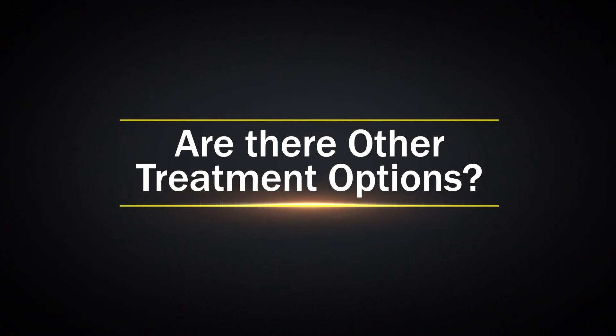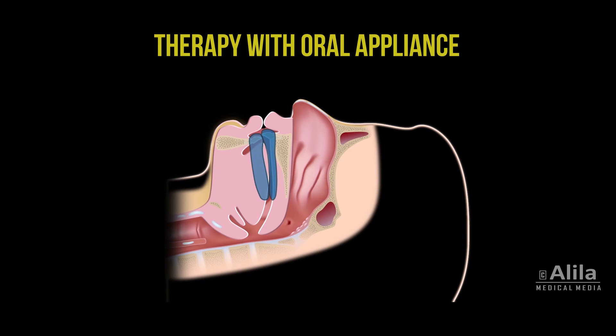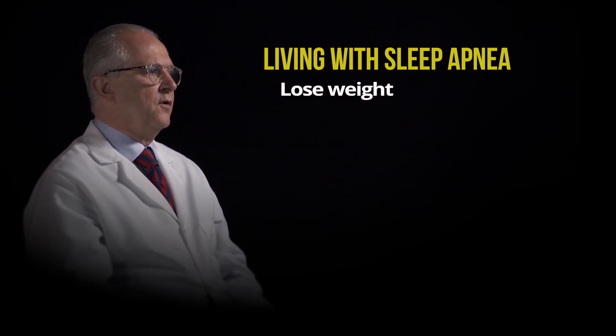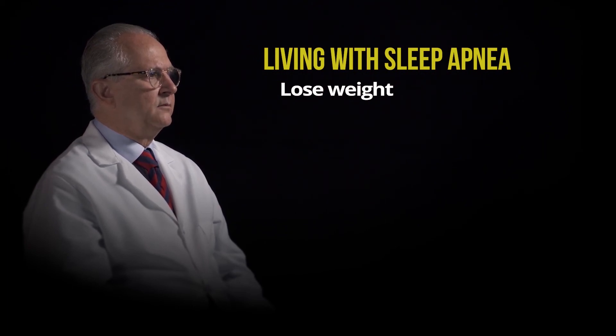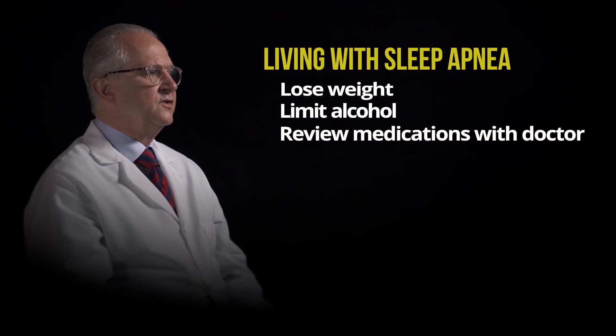Are there other treatment options? Another treatment is an oral appliance — a plastic device like a mouth guard or dental retainer that you wear in your mouth during sleep, custom fit by a dentist to extend your jaw forward and keep your airway open. Surgery on the upper airway performed by a trained surgeon can sometimes help control Obstructive Sleep Apnea. People with sleep apnea are also encouraged to lose weight if overweight, limit alcohol consumption, and limit the use of medications that can make you sleepy. Sometimes weight loss can cure Obstructive Sleep Apnea; however, even after weight loss, some people continue to require ongoing treatment. If you lose weight, a repeat sleep study is needed to see if you still have Obstructive Sleep Apnea.